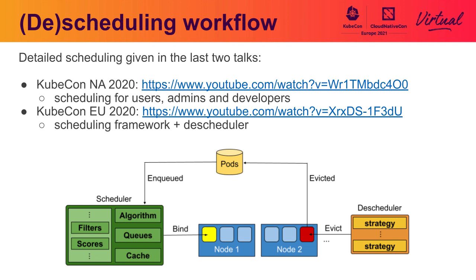The scheduler was designed with the goal of providing a very simple implementation and maximizing throughput. Basically, how it works is that you get a list of nodes, you run filters which gives you a list of feasible nodes, and in case there are two or more nodes, the score plugins give you the node with the highest score. Once a pod is scheduled, the scheduler no longer knows what's going to happen with that pod.